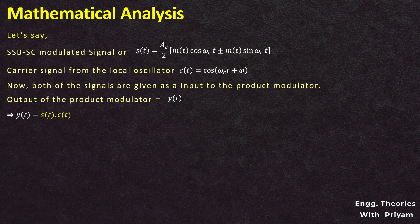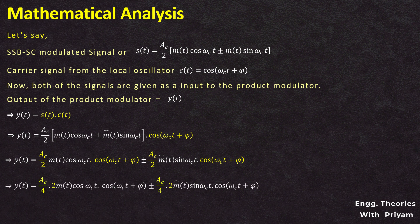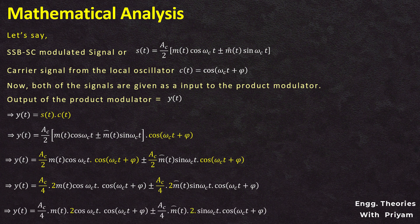Y(T) can be written as Y(T) = (AC/2) · [m(T) · cos(ωC·T) ± m̂(T) · sin(ωC·T)] · cos(ωC·T + φ). We then multiply cos(ωC·T + φ) with both terms, giving: Y(T) = (AC/2) · m(T) · cos(ωC·T) · cos(ωC·T + φ) ± (AC/2) · m̂(T) · sin(ωC·T) · sin(ωC·T + φ). Dividing and multiplying by 2, this becomes: Y(T) = (AC/4) · [2·m(T)·cos(ωC·T)·cos(ωC·T + φ)] ± (AC/4) · [2·m̂(T)·sin(ωC·T)·cos(ωC·T + φ)].